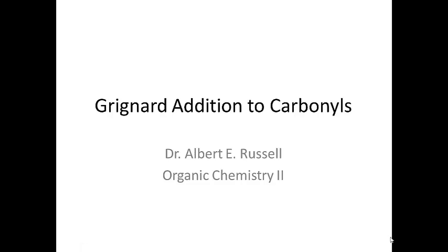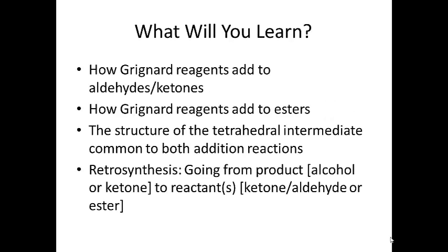This video will describe Grignard addition to carbonyls. We're going to learn how Grignard reagents add to aldehydes or ketones as well as how they add to esters. We'll also learn about the tetrahedral intermediate that's common to both addition reactions to aldehydes, ketones, or esters. Then we'll talk about retrosynthesis — going from the product, either alcohol or ketone, back to the reactants, either ketone, aldehyde, or ester.